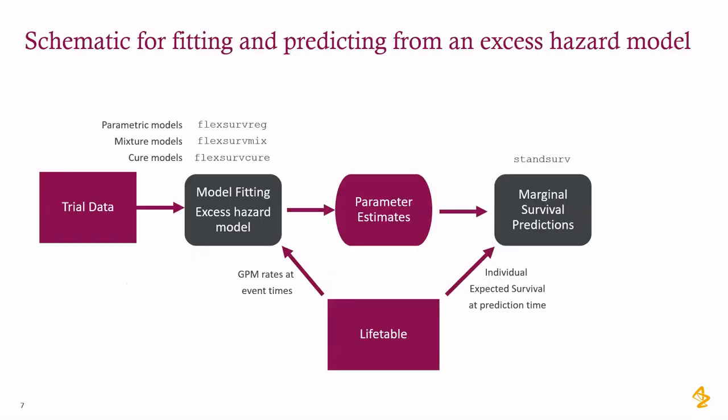This is really just the schematic. Here we've got our trial data, and we can choose a parametric model of our choice — Weibull, Gompertz, gamma, or whatever — using FlexServe reg. If we're interested in mixture models, we can use FlexServe mix; FlexServe cure for cure-based mixture models; and FlexServe spline for flexible parametric models. To fit the excess hazard model, we have to bring in the general population mortality rates at the event time from the life table, which requires a bit of data manipulation. We end up with parameter estimates for the excess hazards — hazard ratios, shape and scale parameters. Then to get the predictions, this is where StanServ comes in: we use the life table to get expected survivals for each individual, and then StanServ averages all these things together.